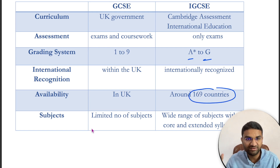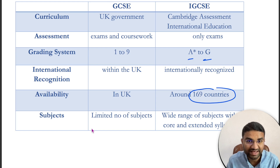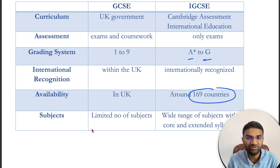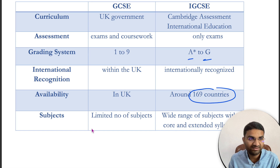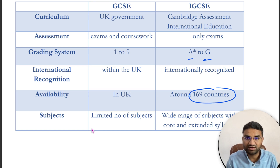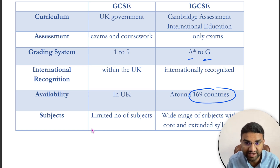In terms of availability, GCSE schools are available in the UK, but iGCSE schools are available in around 169 countries — such a wide scope is there for iGCSE. For subjects, GCSE has a limited number of subjects, whereas iGCSE offers more than 30 to 40 subjects in a wide range.